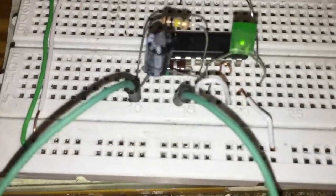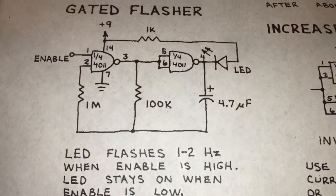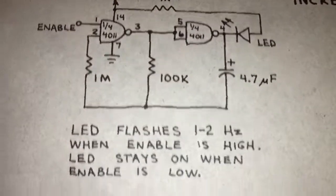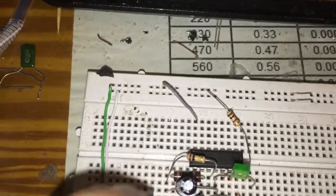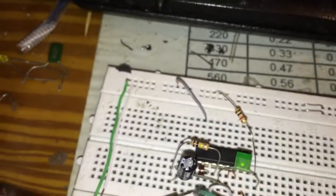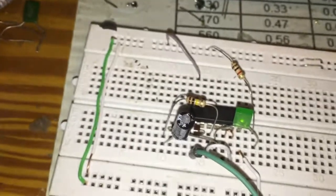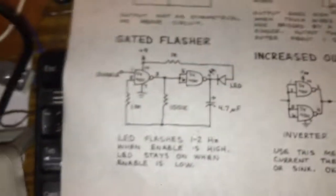Also this one, the P1 - if connected to the 1-2 Hz, it's gonna blink the device. With the low, it will stay on. When the P1 is not connected to any place, the LED will not blink. It's named gated flasher.